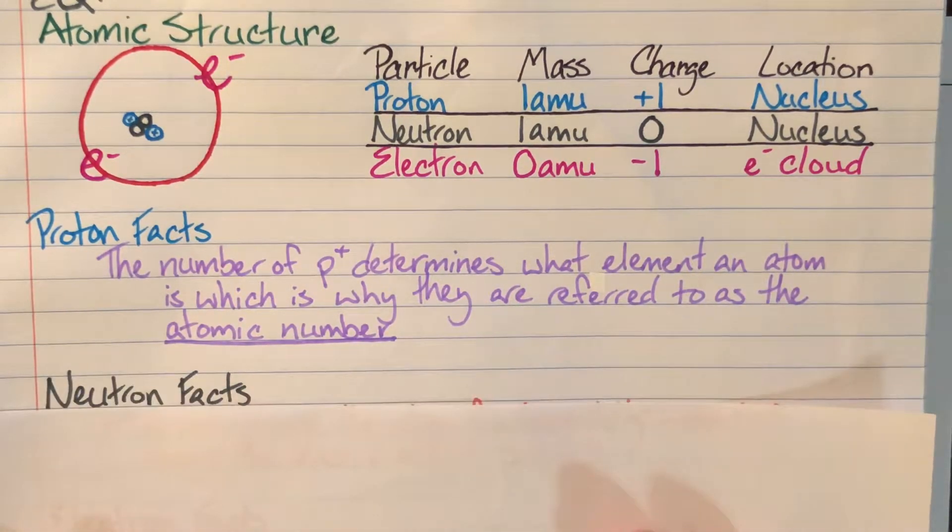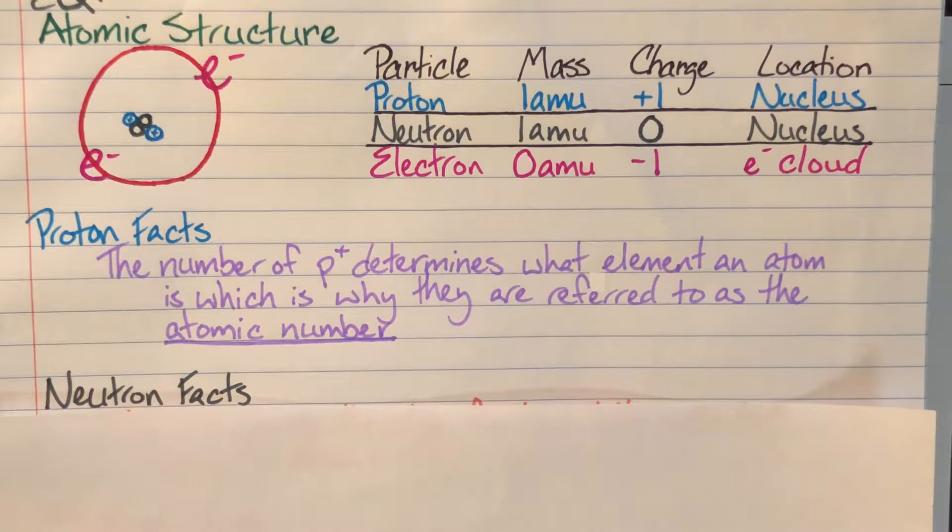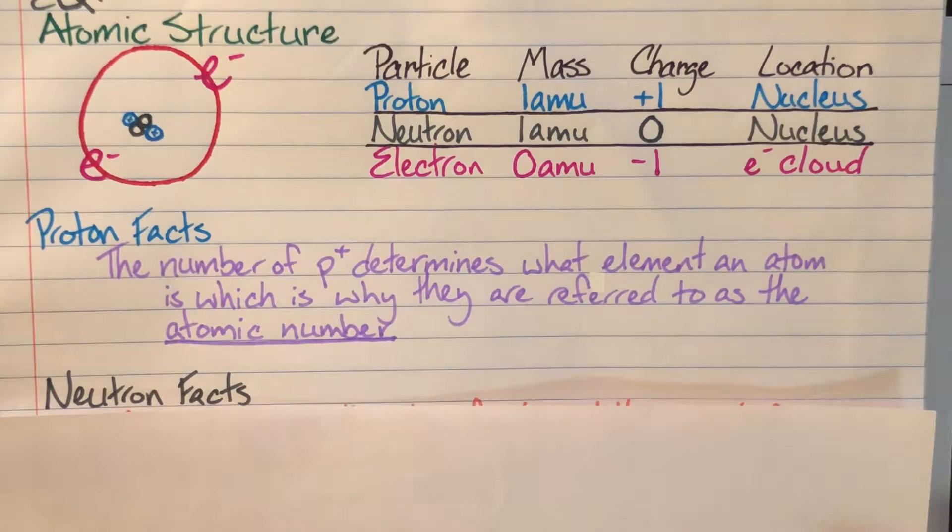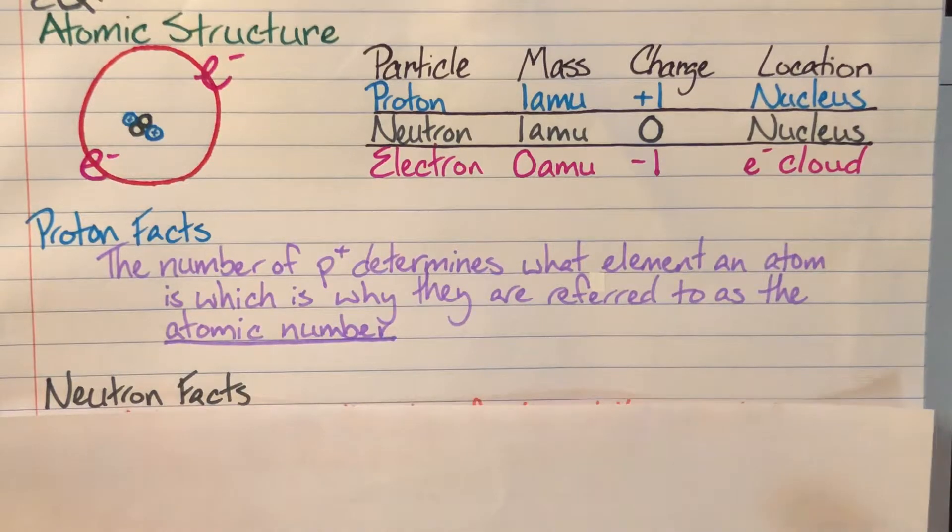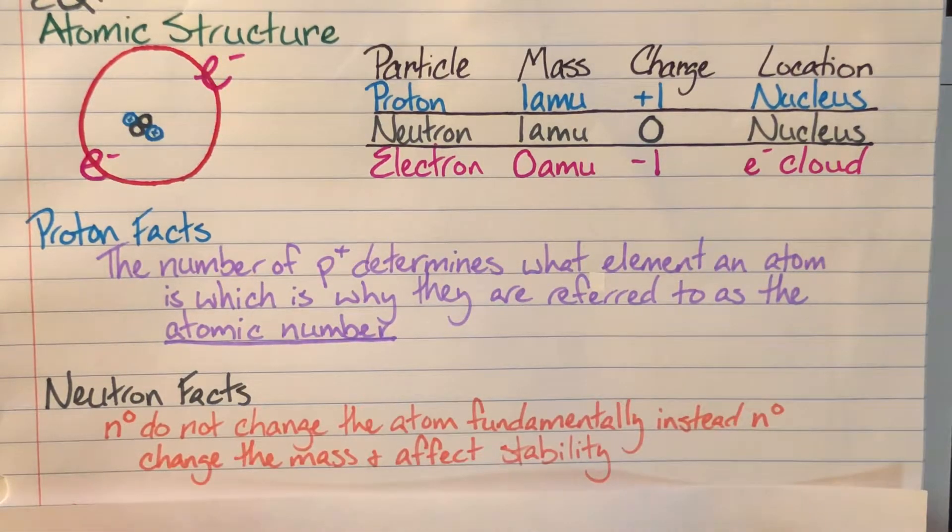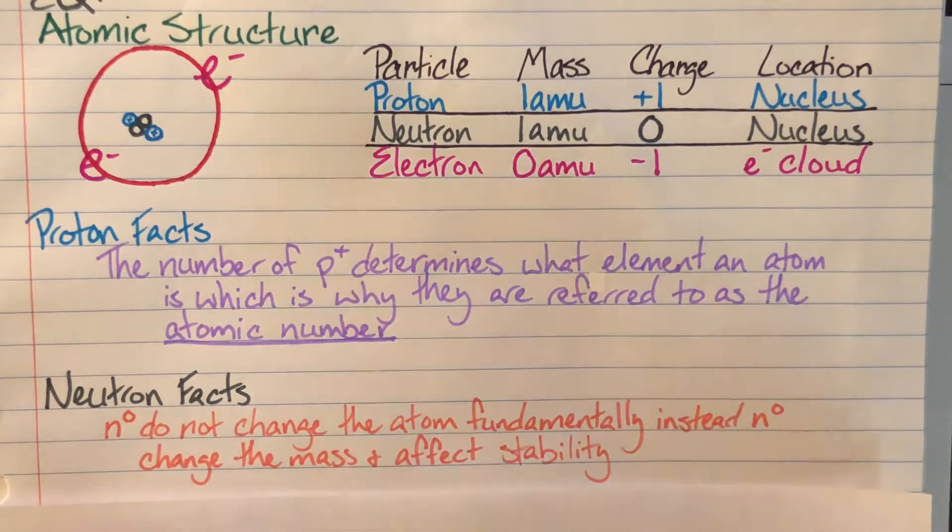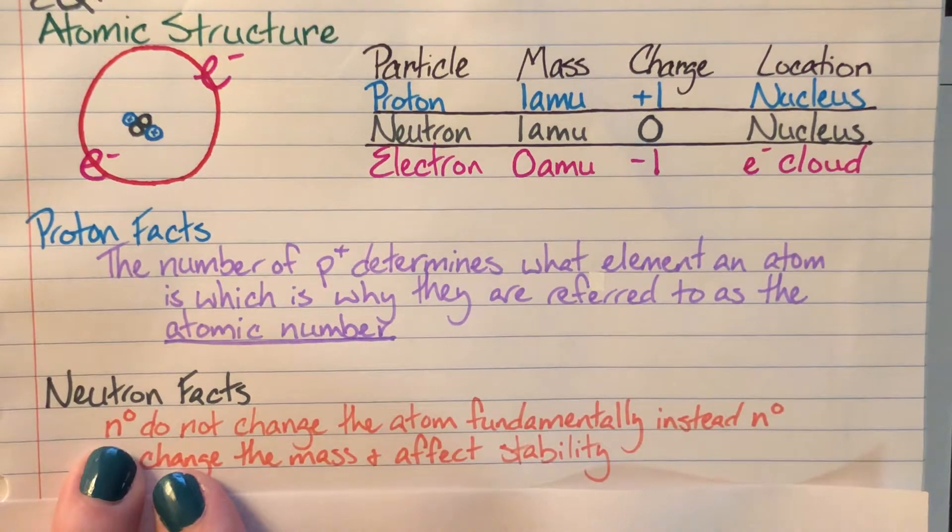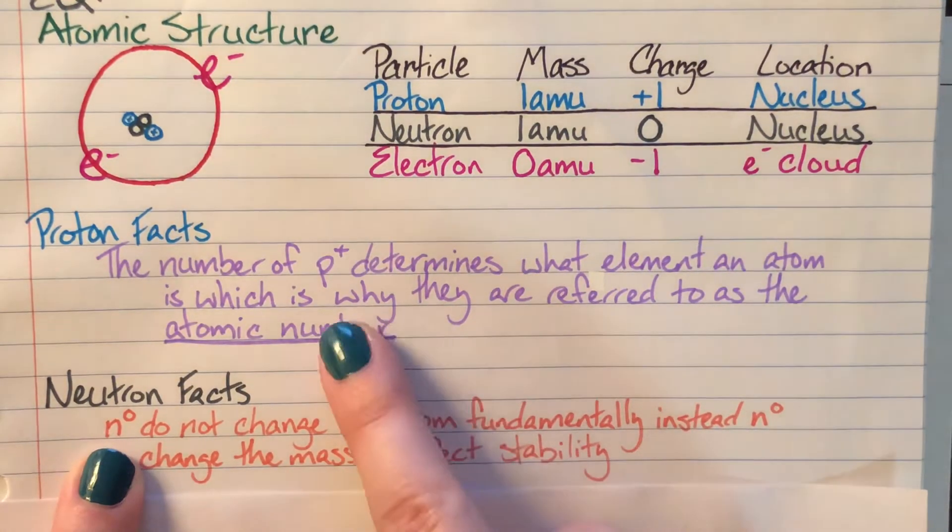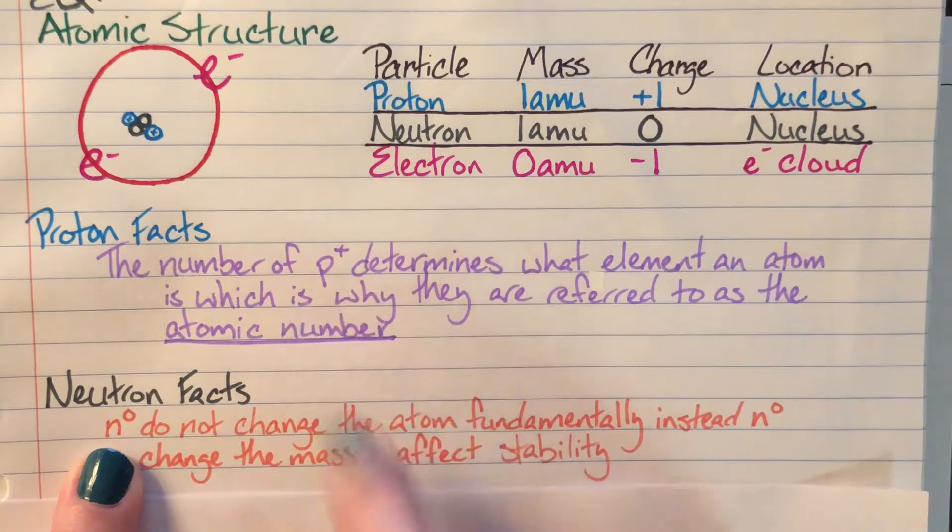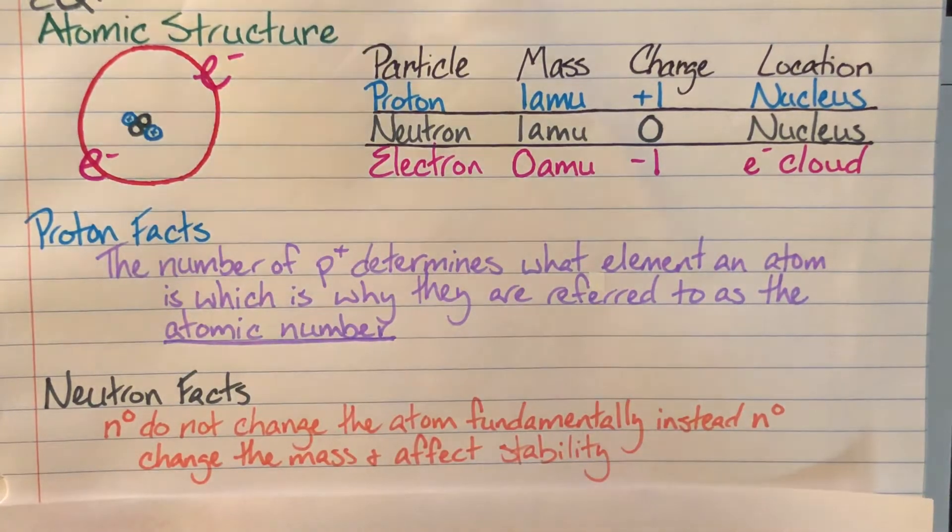The next subatomic particle that we are going to be clearing up some misconceptions and reiterating some facts about is going to be our neutrons. So neutrons, this is a little shorthand for you. I forgot to mention it up here for protons. Protons, the shorthand is a P with a plus sign. This is really to help you in remembering what a proton is fundamentally.